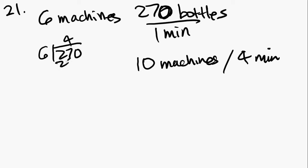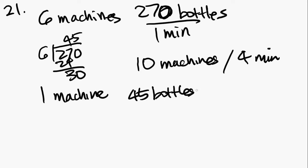So that's just a simple division problem. Six goes into 270, four goes into 27, 24, 35. So what we found out here is that one machine can produce 45 bottles in one minute.